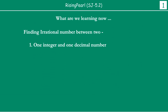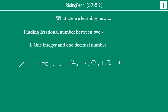Now let us take a quick recap of what is an integer. Integers are basically represented by uppercase Z and this is a collection of numbers ranging from minus infinity, dot dot dot, minus 2, minus 1, 0, then 1, 2, dot dot dot all the way to plus infinity. So this collection of numbers is called integers.